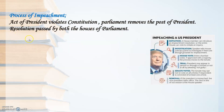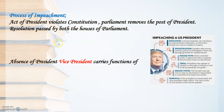Impeachment takes place only when a resolution is passed by both houses of Parliament. It is not possible for any one person to remove the President. It is a long procedure where the majority of members of both houses must pass the resolution — only then can he be removed from the post before his five-year term. In the absence of the President, the Vice President of India carries out the functions of the President.